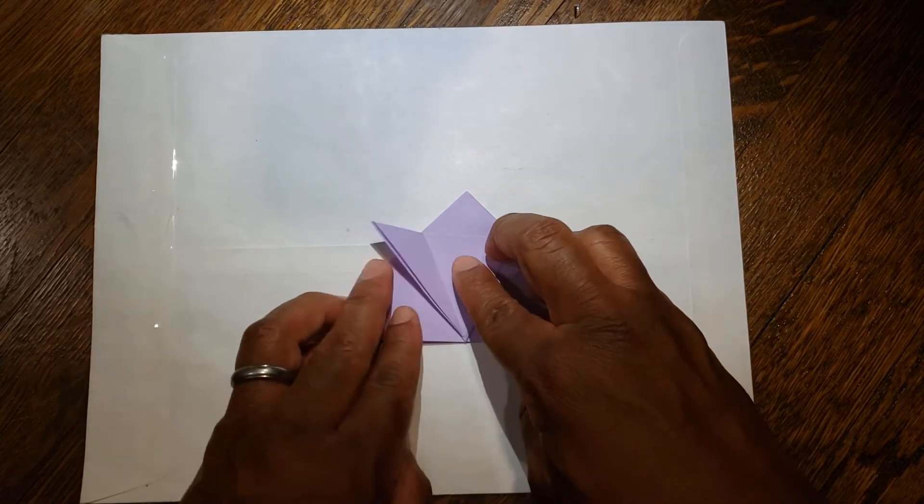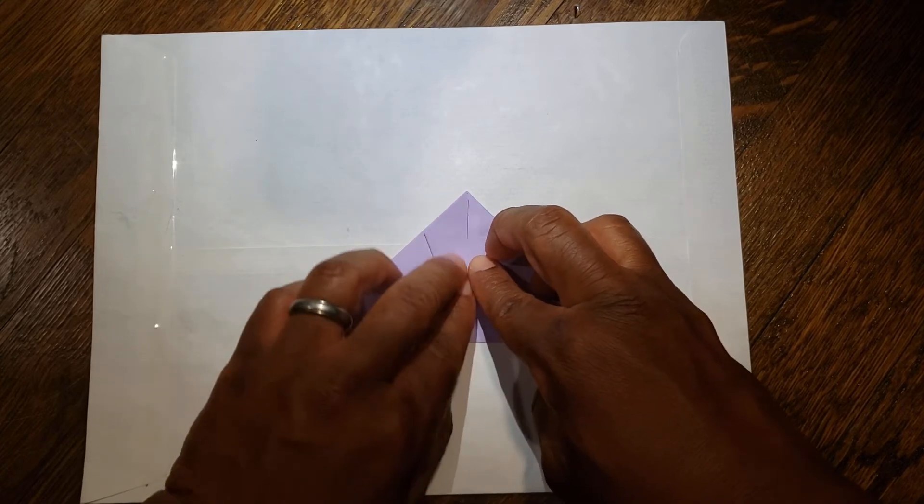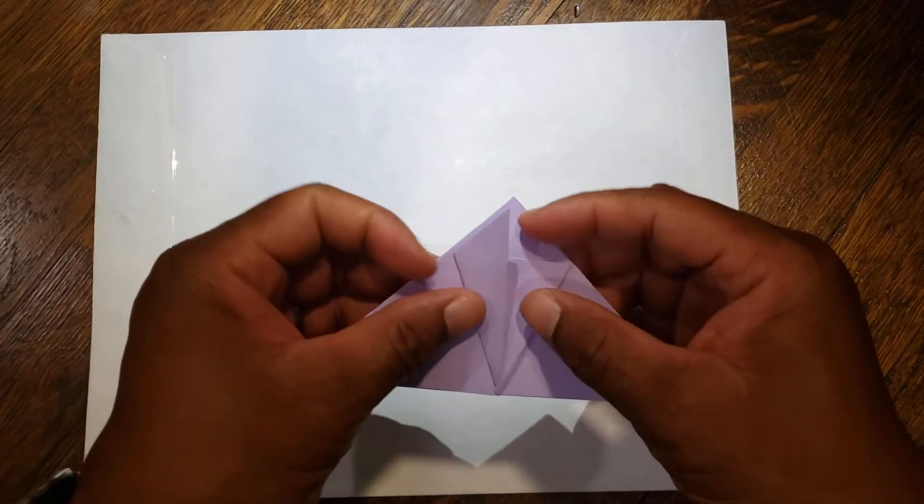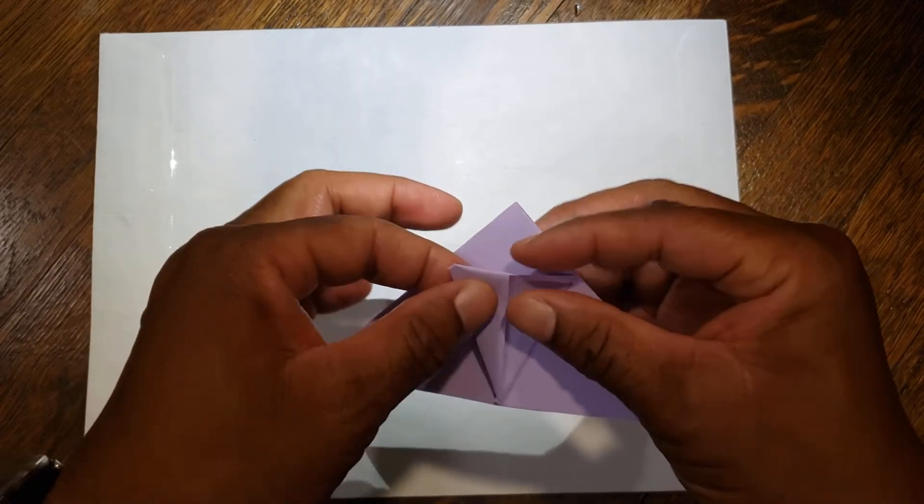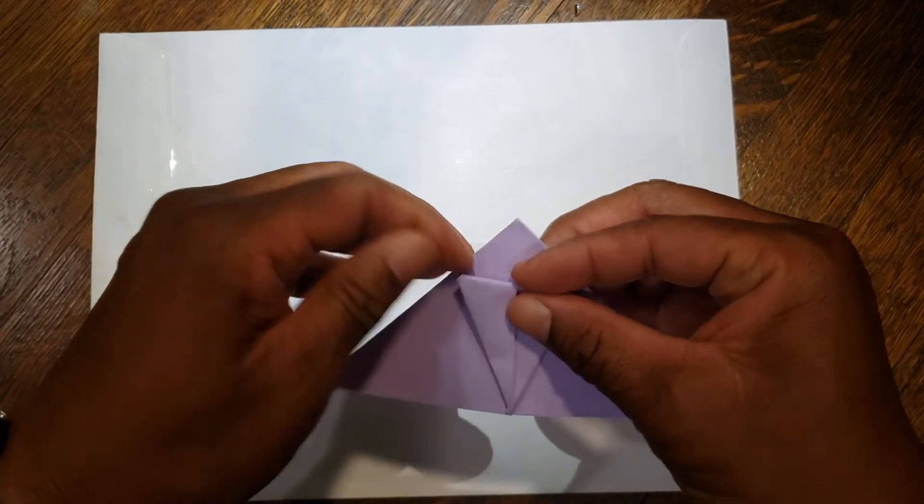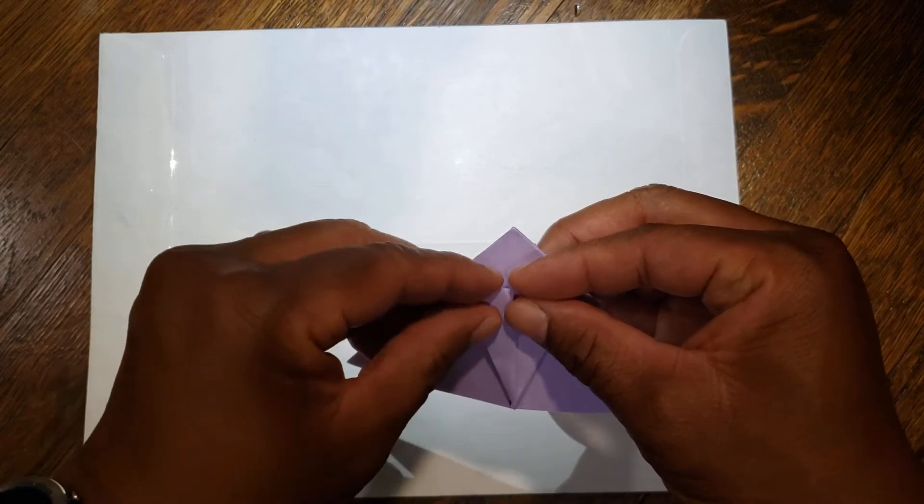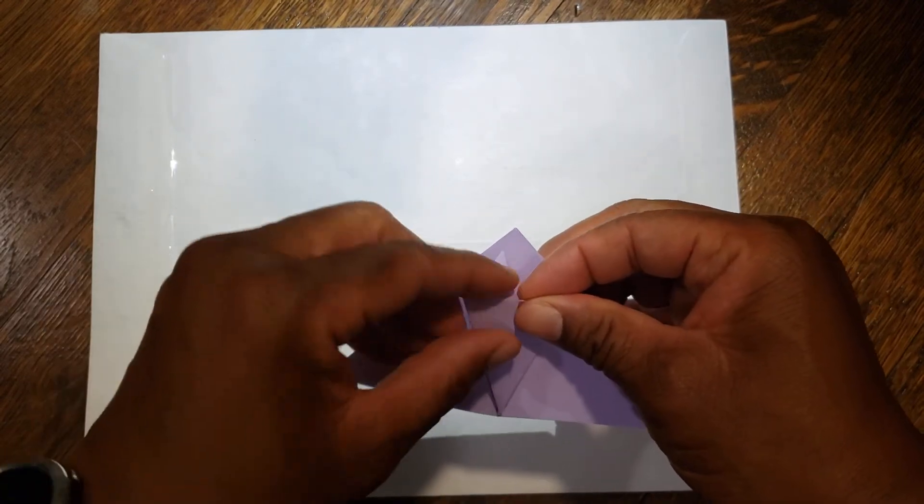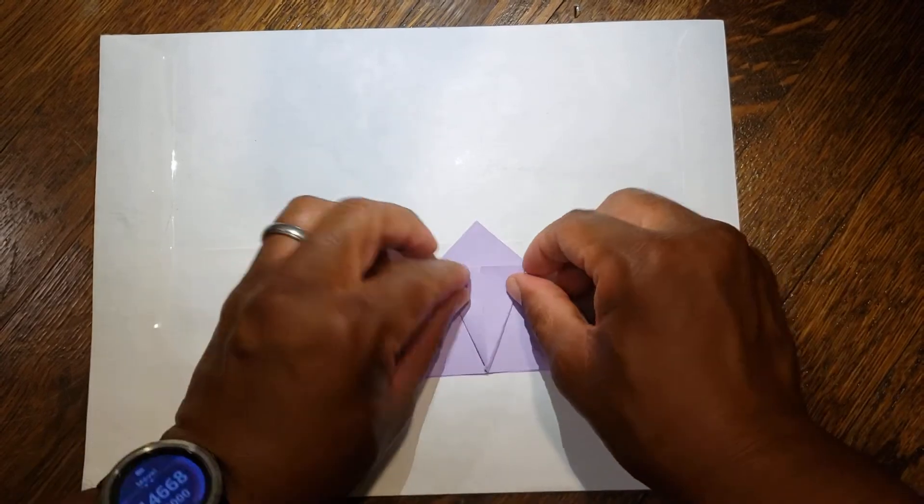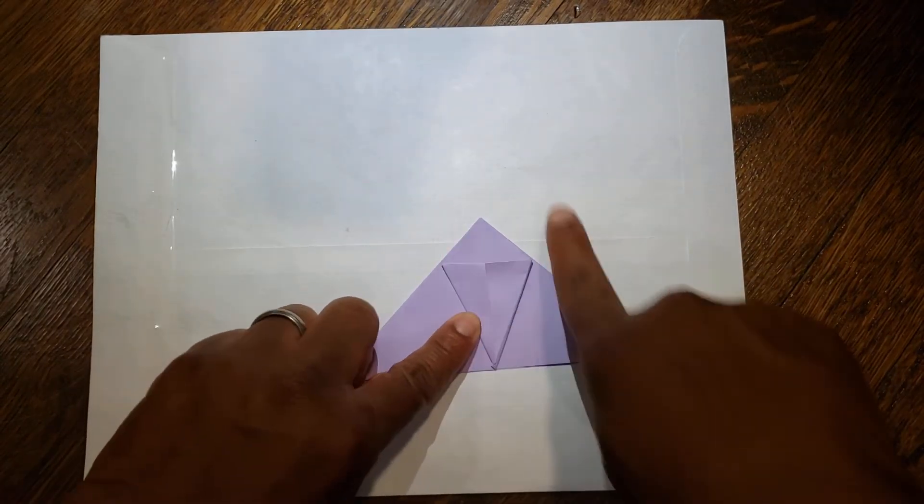From here over to here. Then pick up your paper and you're going to tuck this triangle behind this single flap, from here forward to behind. Now we have a shape that looks like a kite.